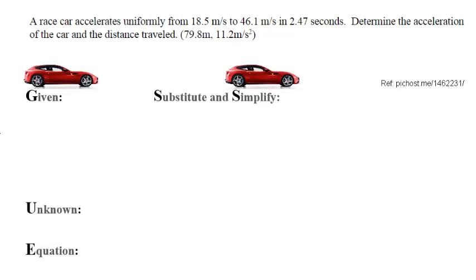A race car accelerates uniformly from 18.5 meters per second to 46.1 meters per second in 2.47 seconds. Determine the acceleration of the car and the distance traveled. Now there's two problems here. I'd ask you for two different things.